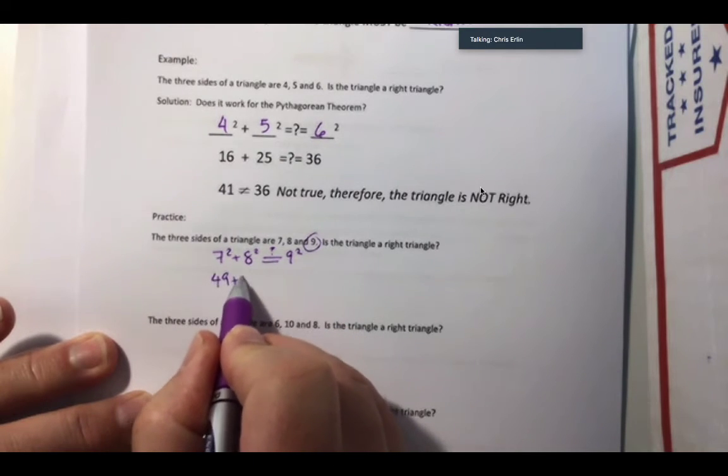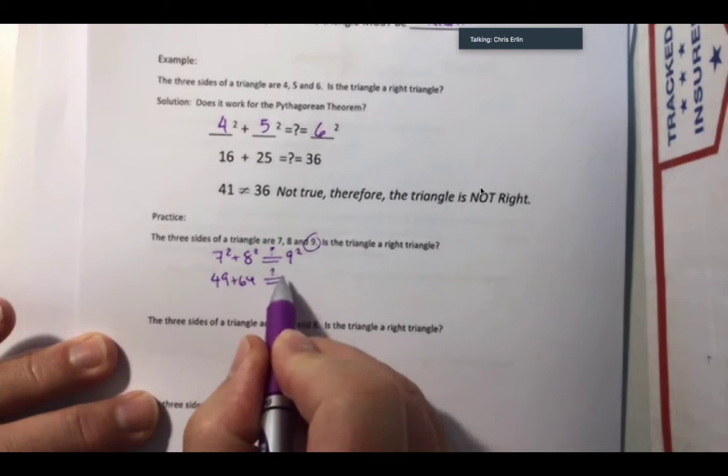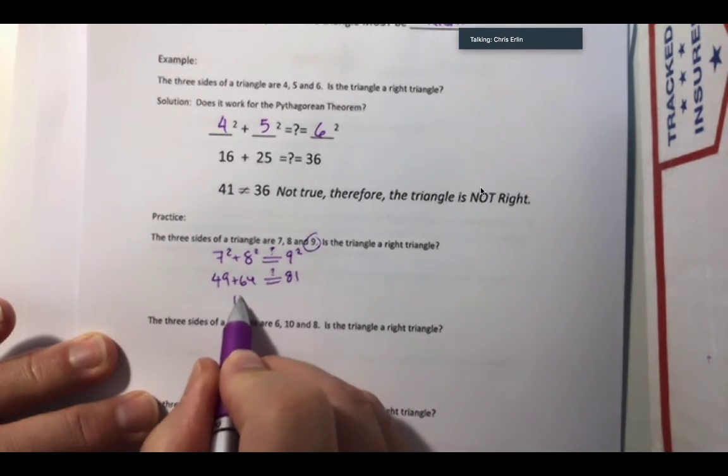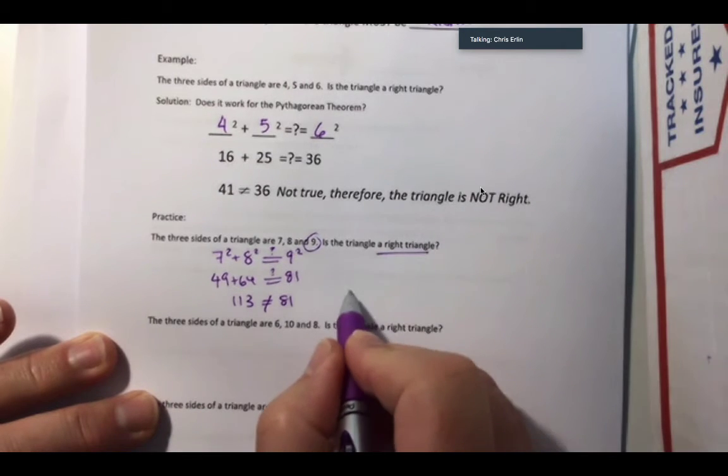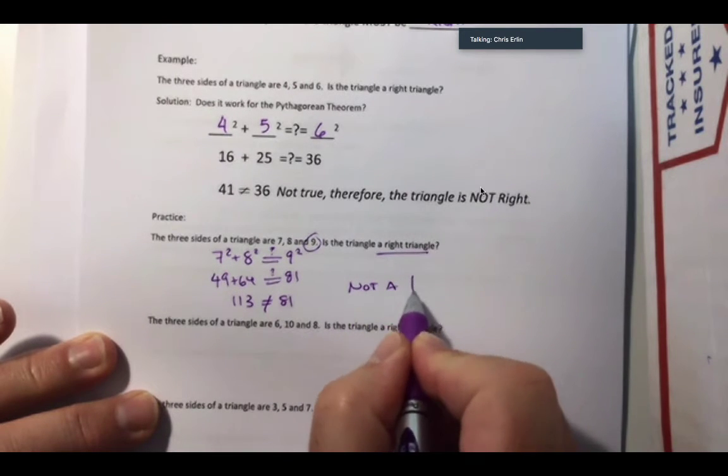So 49 plus 64 is maybe equal to 81. So that's 113. That's not equal to 81. Therefore, not a right triangle.